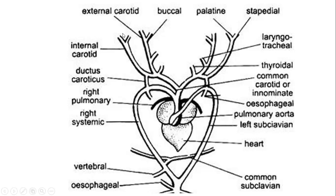Each internal carotid bifurcates into two branches — palatine and stapedial — which supply blood to the brain region. Each external carotid also gives off three branches: laryngotracheal and three buccal arteries.